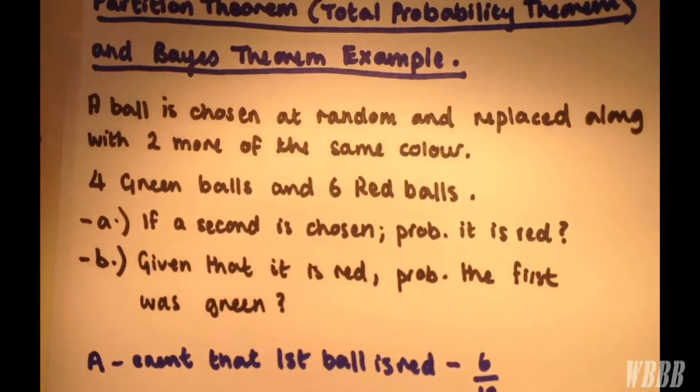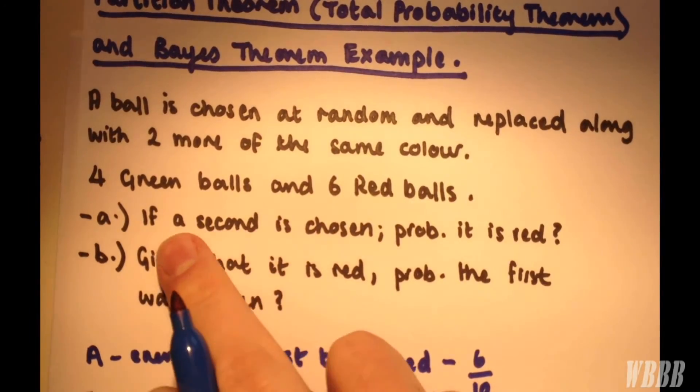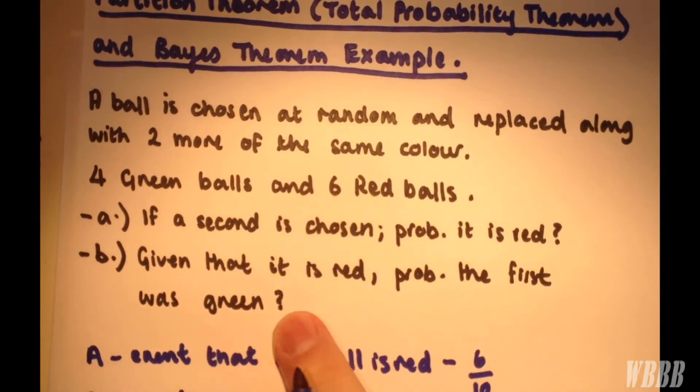Part B: Given that it's red, what's the probability that the first was green? When you see 'given,' it normally signals to use Bayes' theorem.